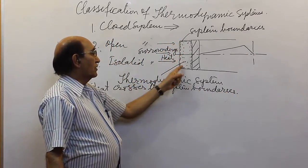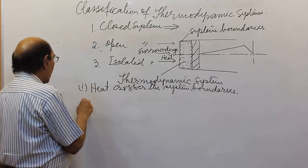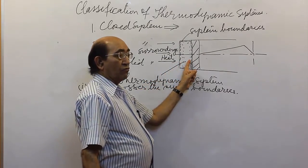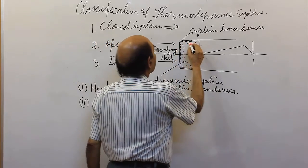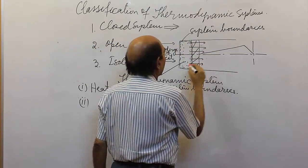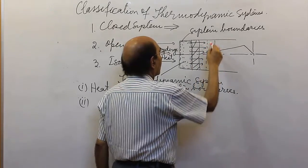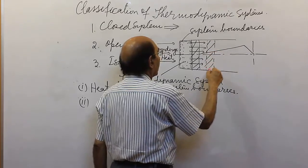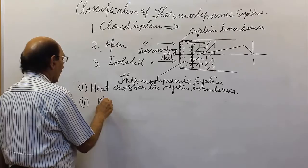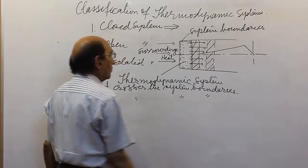These are the boundaries. Heat has crossed. Then what happens? A part of this heat gets converted to work, and that work will push the piston towards the right hand side. Say after very small interval of time, this is the position of the piston. That means our second observation is work also crosses the system boundaries.